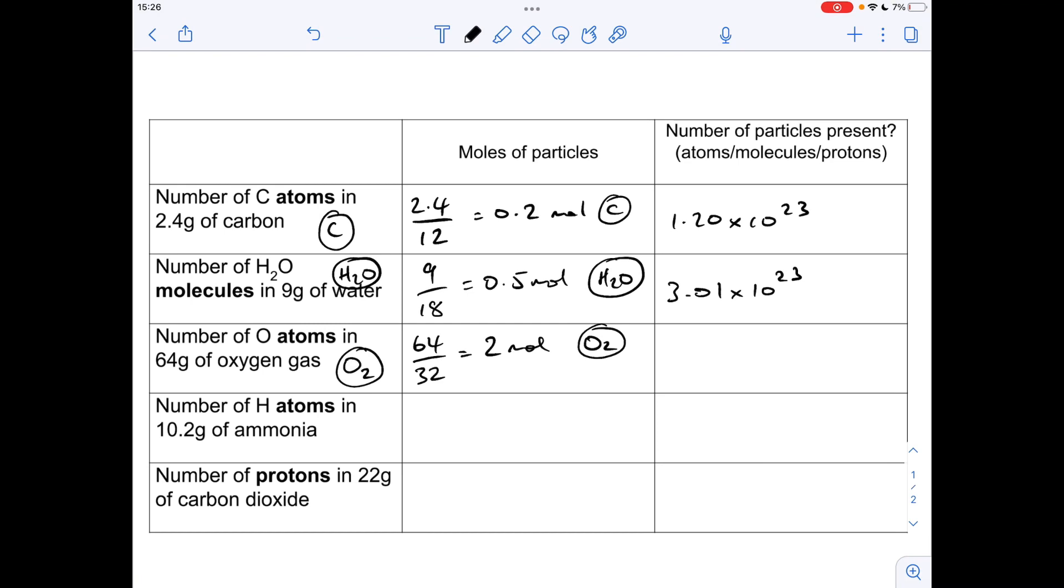But we want to know how many atoms we've got. So if we've got two moles of O2 molecules, how many moles of atoms have we got? We've actually got twice as many because there's two atoms in each molecule. So we've got four moles of oxygen atoms, which I'll just represent like that. So that's what we multiply by Avogadro's number and we get 2.41 times 10 to the 24.